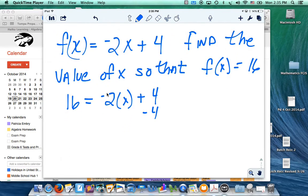Well, I'll subtract 4 from both sides. Negative 2x equals 12. If I divide both sides by negative 2, x is negative 6. So, the value of x, negative 6, makes f of x equal 16.